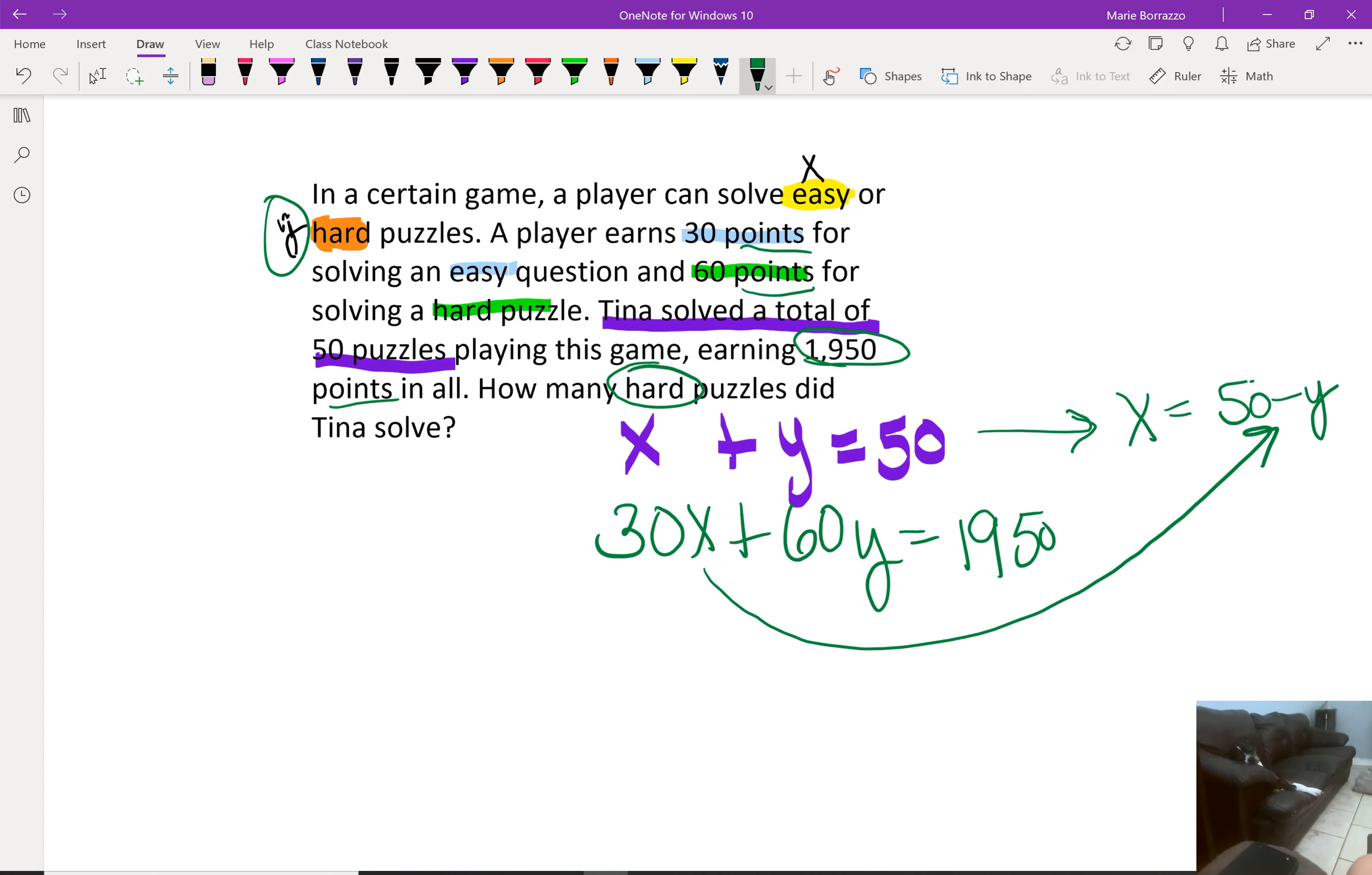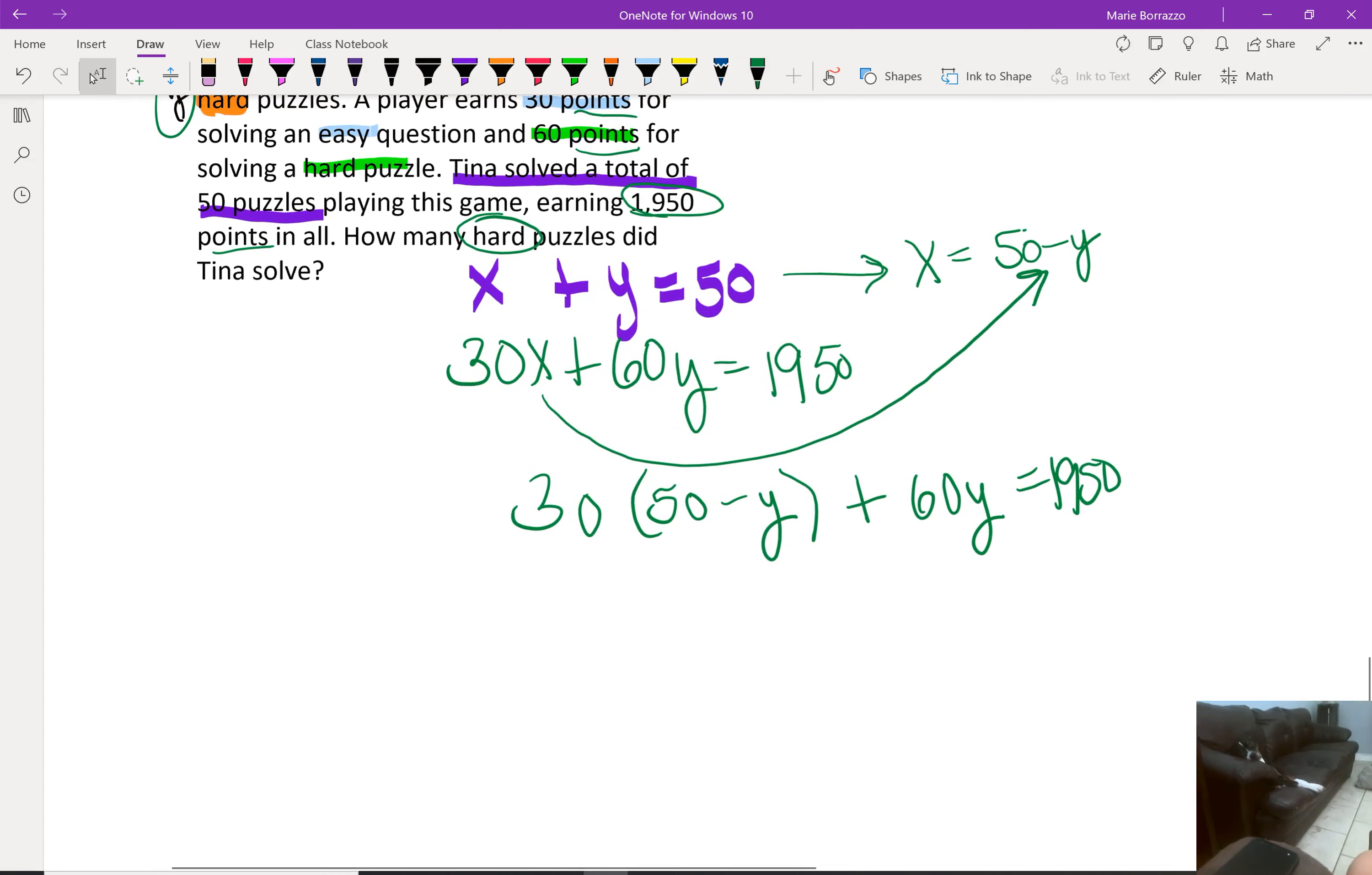So that means that I have 30 times the 50 minus y plus the 60y equal to 1,950 points. Now answer me this question: if I were to use this method, am I solving for y, which are the hard puzzles? The answer is yes.